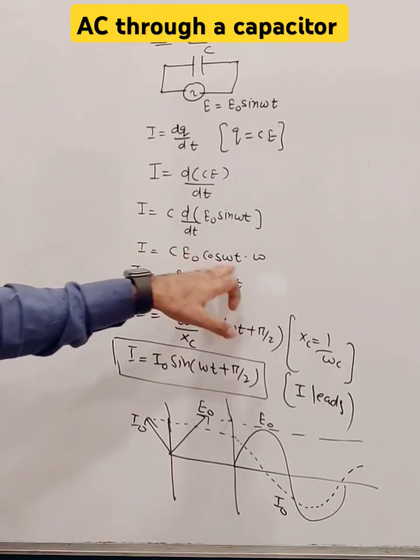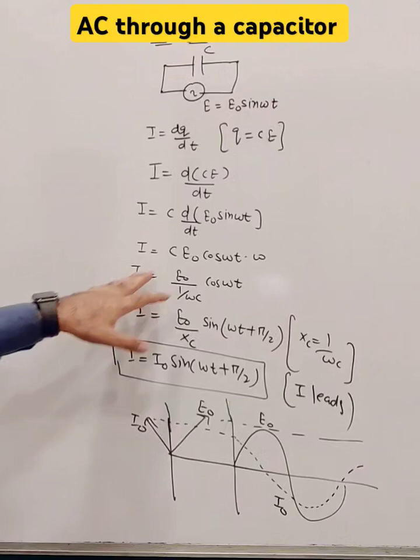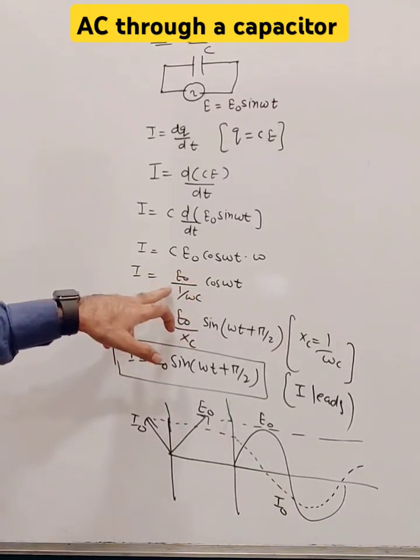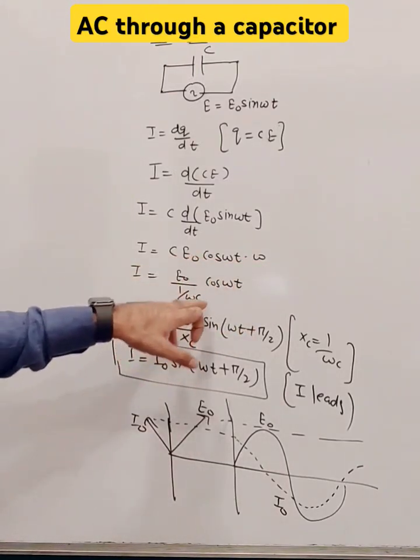You will get the value of I equals C E naught cos of omega t dot omega, and I equals E naught by 1 by omega C.